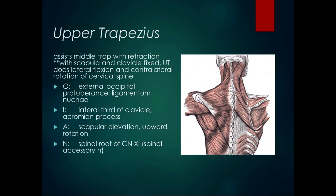The upper trapezius also has a reversal of muscle function when the scapula and clavicle are fixed — now the proximal end is relatively fixed, and the origin moves towards the insertion. The external occipital protuberance moves towards the acromion process, which produces lateral flexion of the neck. It also does contralateral rotation of the cervical spine. So the upper trapezius has its normal action of scapular elevation and upward rotation, and its reversal action of lateral flexion and contralateral rotation of the head and neck.